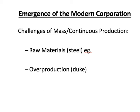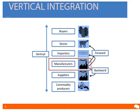Looking at the case of raw materials, particularly steel, a lot of what was required was securing access to raw materials — and to do that, companies integrated themselves vertically. In the case of cigarettes, a man named Duke was a pioneer of the early American cigarette industry, and concerns over overproduction led Duke and his company to integrate themselves vertically. So let me show you a slide about what vertical integration actually is.